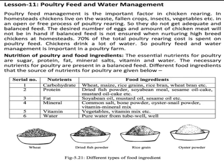Different food ingredients that are a source of nutrients for food are given below. One is carbohydrate, and this type of food ingredient contains wheat, mice and rice grains, rice, wheat brain, etc. And protein includes dried fish powder, soybean meal, sesame oil cake and mustard oil, etc.